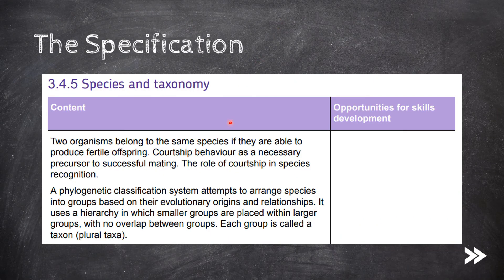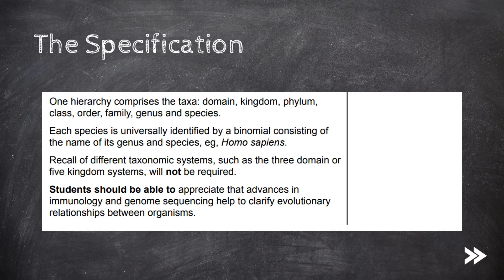First, we'll have to learn the definition of species, followed by an overview of courtship behaviour and how it is a necessary precursor to successful mating. Next, we'll learn what the phylogenetic classification system is and how it arranges species into groups based on their evolutionary origins and relationships. We will learn what a taxon is and how the phylogenetic classification system is structured. Finally, we'll cover the binomial naming system and how it is used to name each species.